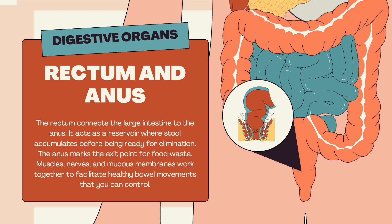The rectum connects the large intestine to the anus. It acts as a reservoir where stool accumulates before being ready for elimination. The anus marks the exit point for food waste. Muscles, nerves, and mucous membranes work together to facilitate healthy bowel movements that you can control.